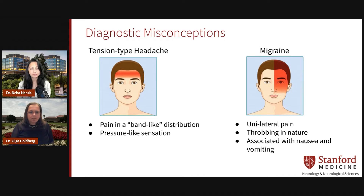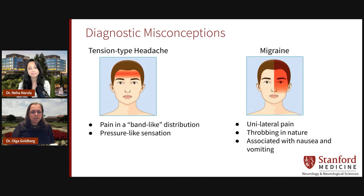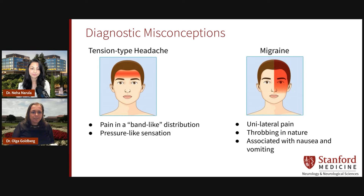By definition, migraines are generally debilitating. Generally, they last four to 72 hours. And although they're often unilateral, they can switch sides. They also have associated features such as nausea or light and sound sensitivity. Tension headaches, on the other hand, do not have any migrainous features such as nausea or light or sound sensitivity.